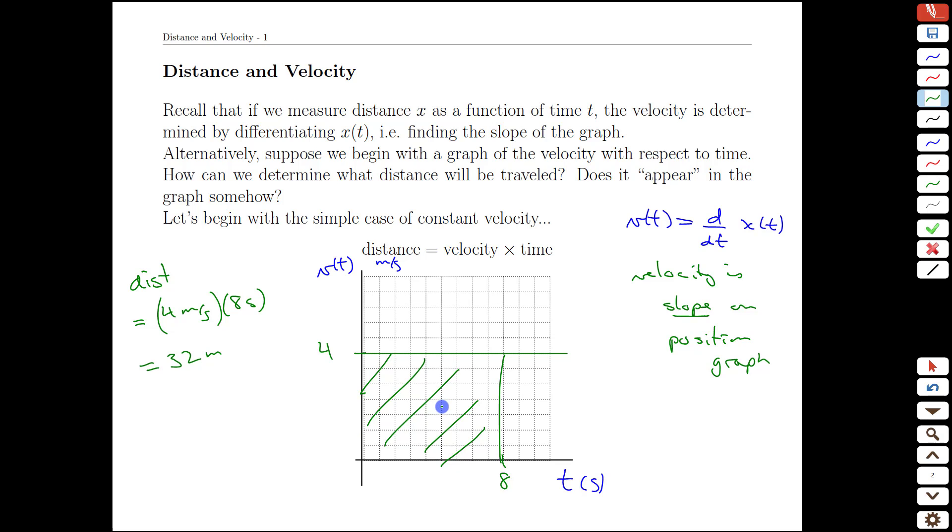That is a critical observation for what we're going to do next. If we have the velocity against time and we want to talk about distances, we're going to see that as areas.